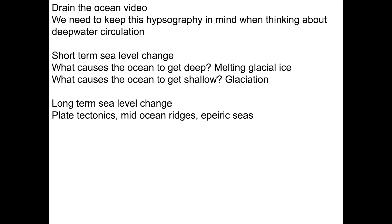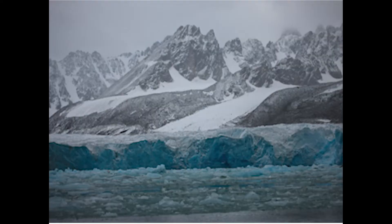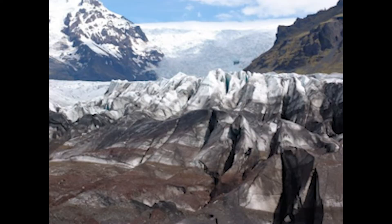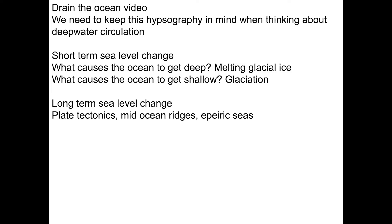The primary way to make the ocean deeper in the short term is the melting of glacial ice — ice that sits on the land surface, which is different from sea ice. When that ice melts, it contributes to the global oceans and sea level rises. To make sea level decrease, we increase glaciation. During the height of the last ice age, sea level was about 300 feet — about 100 meters — lower than it is today.